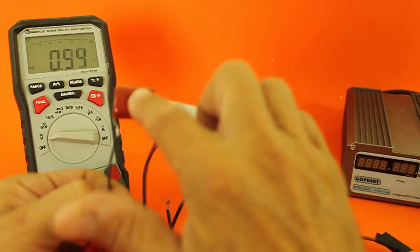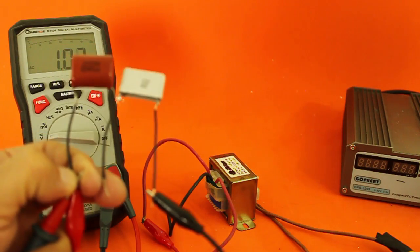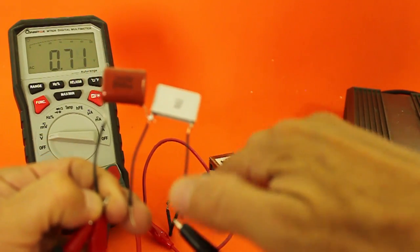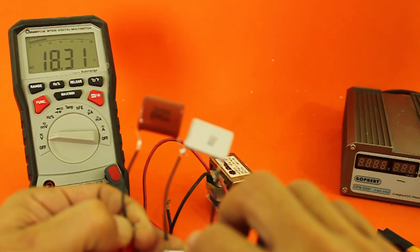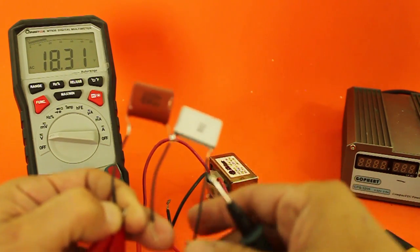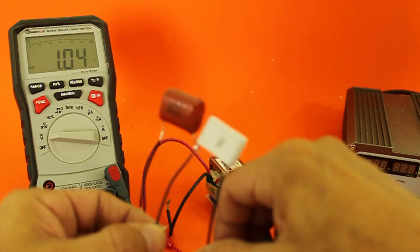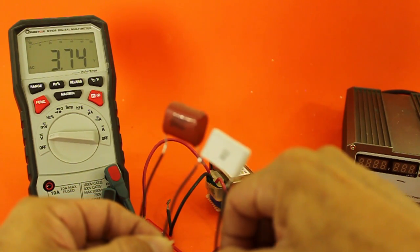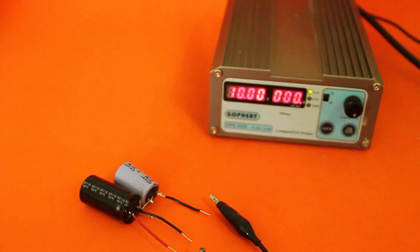In the first capacitor, which is 1uF, the other is 4.7uF, we have 18.3 volts. And the rest of the voltage must be in the other capacitor. And indeed, we have 3.73 volts.